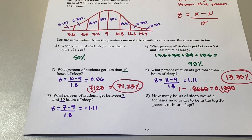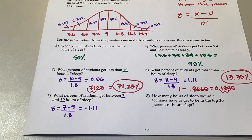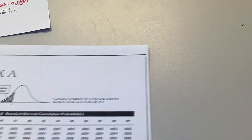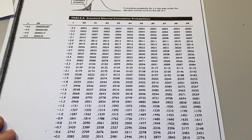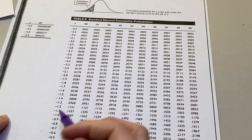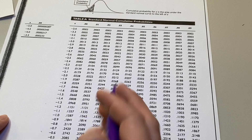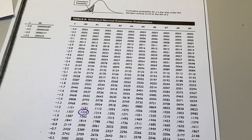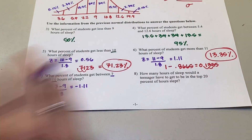On the calculator: 7 minus 9 equals negative 2, divided by 1.8. It's negative — negative 1.11. Use the negative side of the chart. Find negative 1.1 and go to the 1 column: that gives us 0.1335.